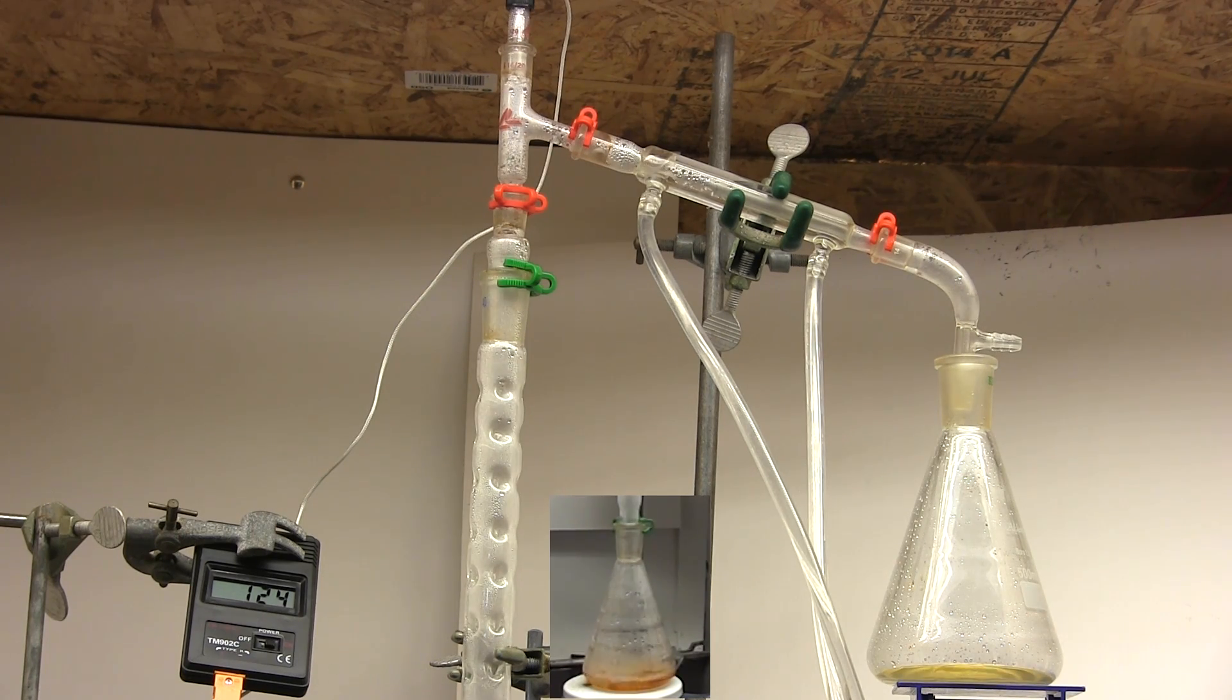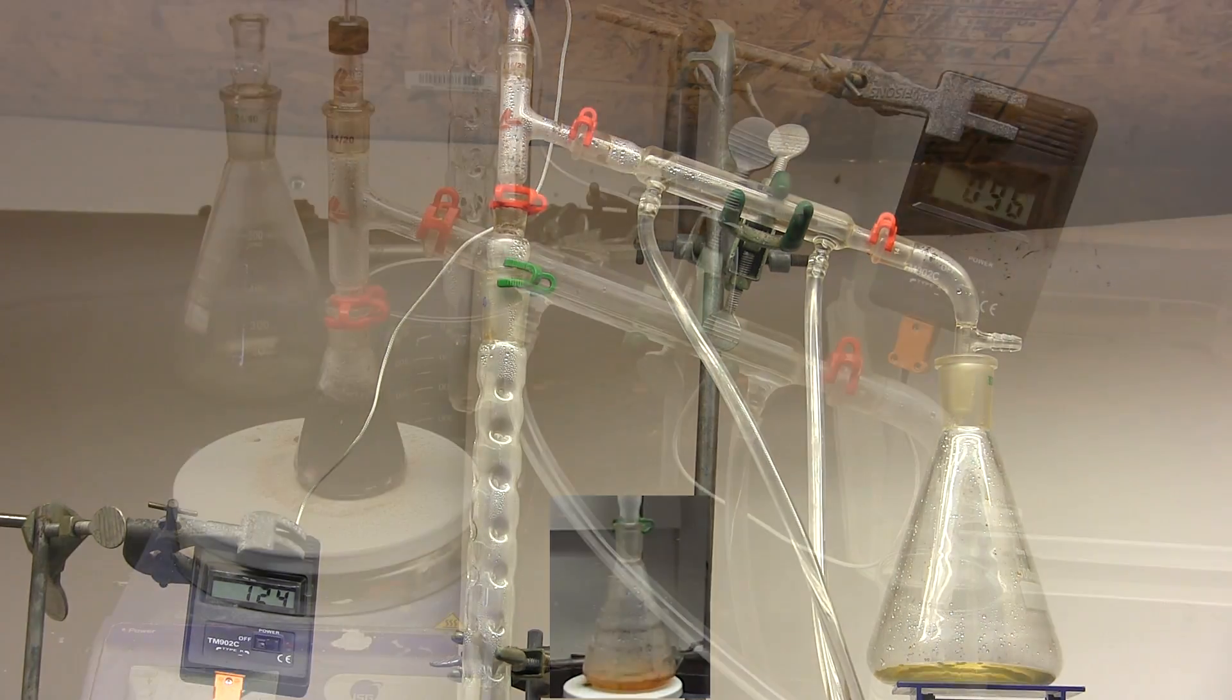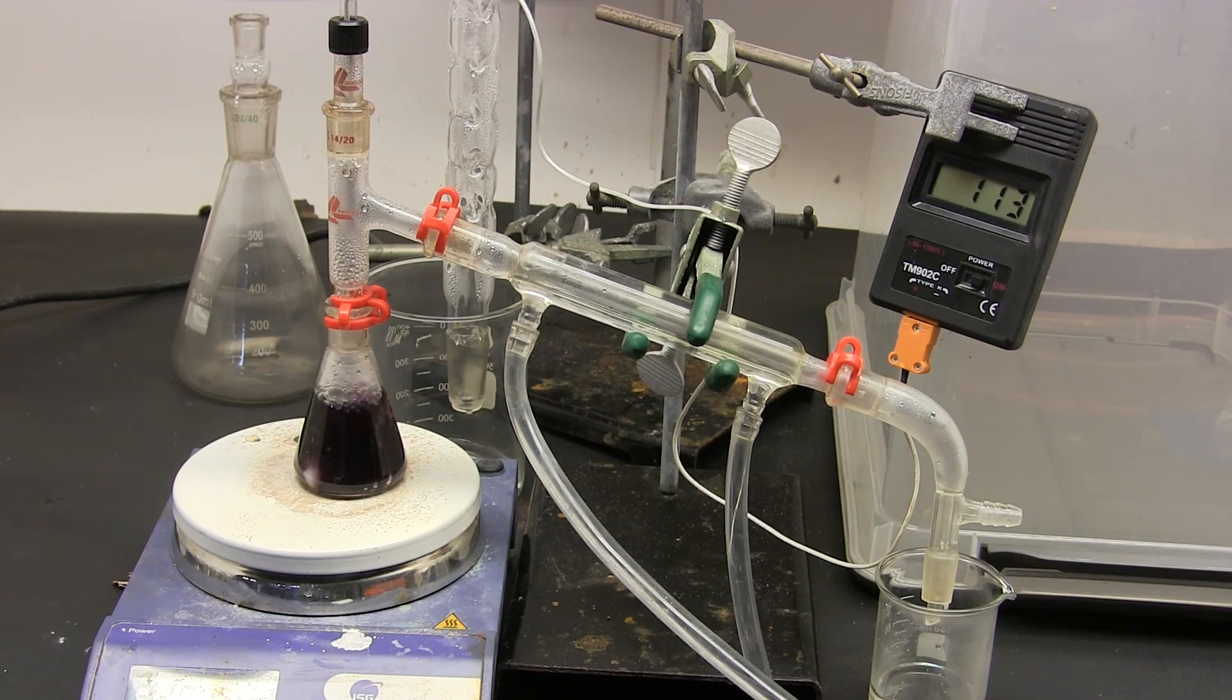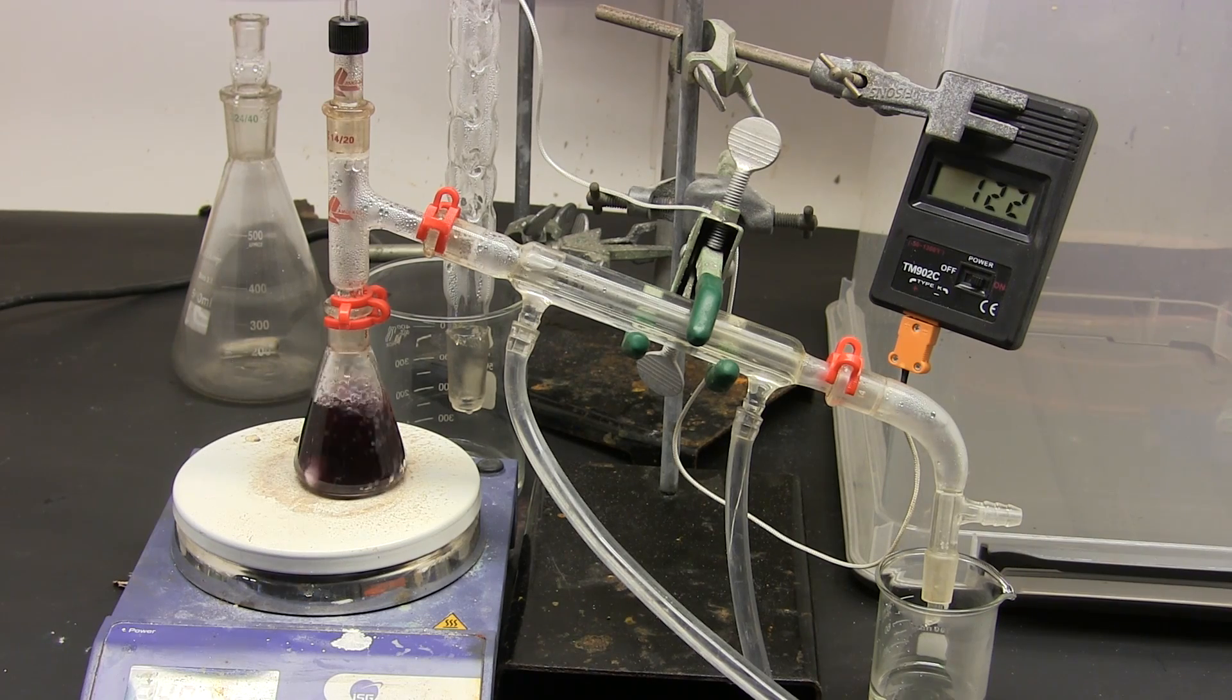While I've successfully removed all the water that's not part of the azeotrope I'll likely need to redistill the hydrobromic acid azeotrope to purify it. Okay I've recombined the hydrobromic acid to be distilled again. I'm using a much smaller flask to reduce the dead space in the system and thus recover more of the hydrobromic acid.